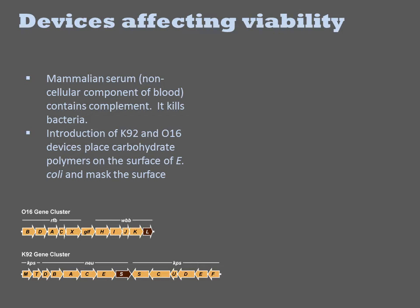These modifications allow the bacterium to survive in horse serum. Horse serum, or the noncellular component of adult horse blood, contains complement, which will quickly kill a non-encapsulated bacterium. However, with a complete set of functioning genes, viability is restored.